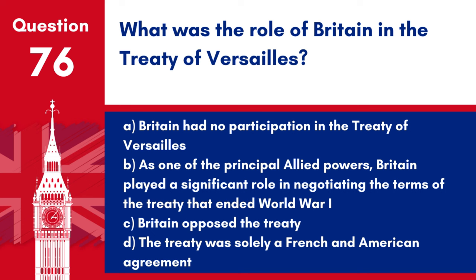Question 76: What was the role of Britain in the Treaty of Versailles? a. Britain had no participation in the Treaty of Versailles. b. As one of the principal Allied powers, Britain played a significant role in negotiating the terms of the treaty that ended World War I. c. Britain opposed the treaty. d. The treaty was solely a French and American agreement. Answer: b. The Treaty of Versailles had profound implications for the post-war world, with Britain influencing its outcomes.